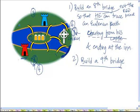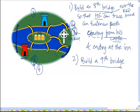For the Eulerian path to start from the red prince's region, the degree of that vertex must be odd, so one endpoint of the new bridge must be in that region. The ending point is the inn, which already has an odd degree and should remain so. The church island already has degree 4, so it should be treated accordingly as we determine the placement of the 9th bridge.